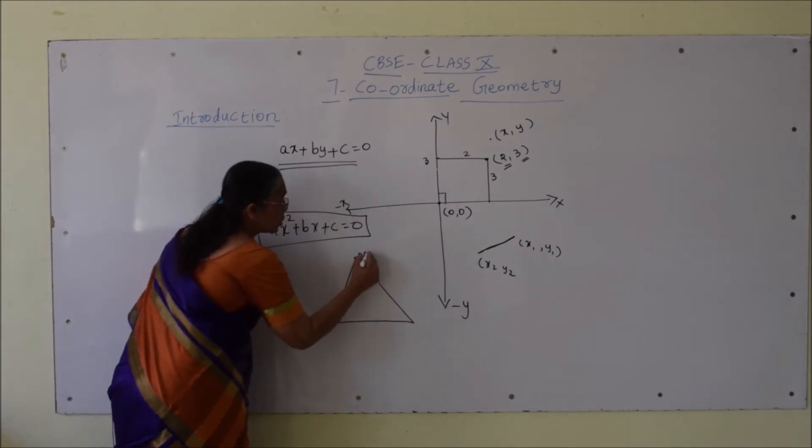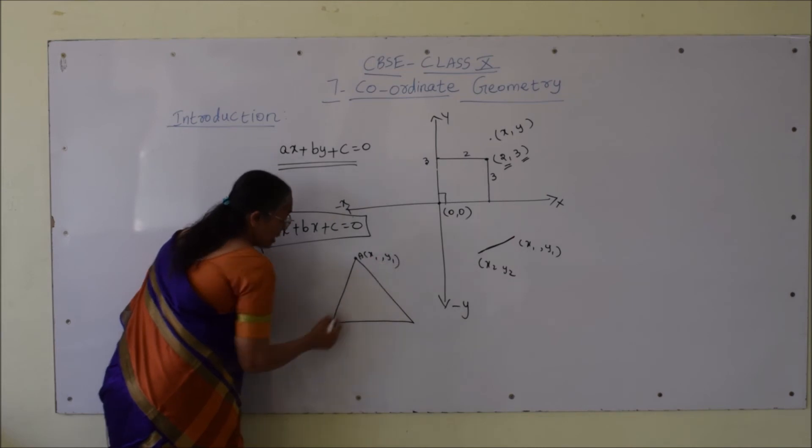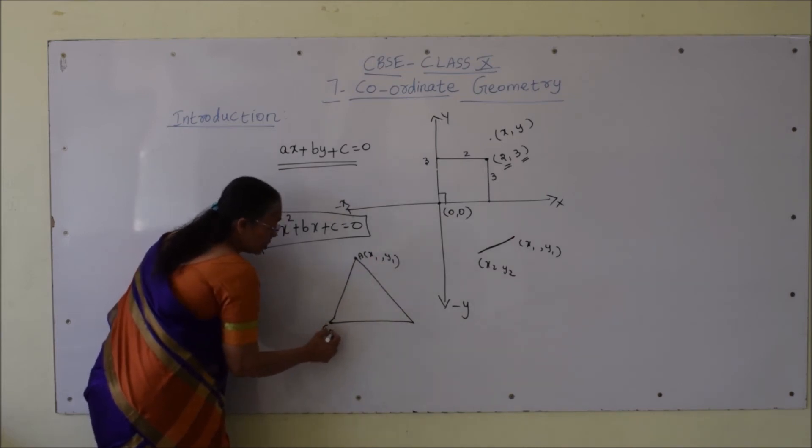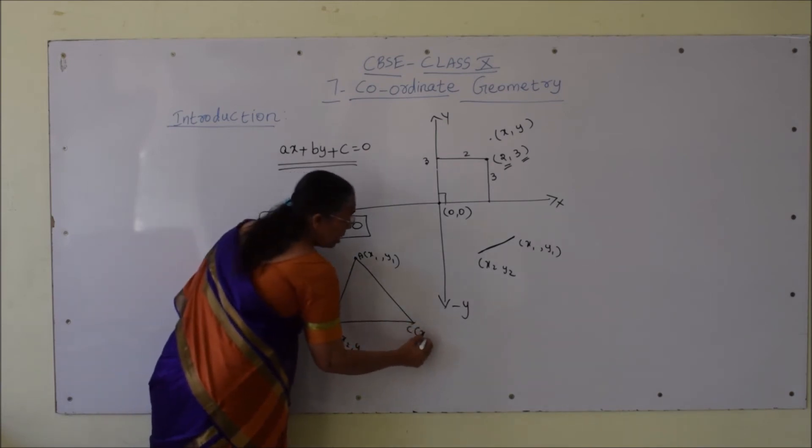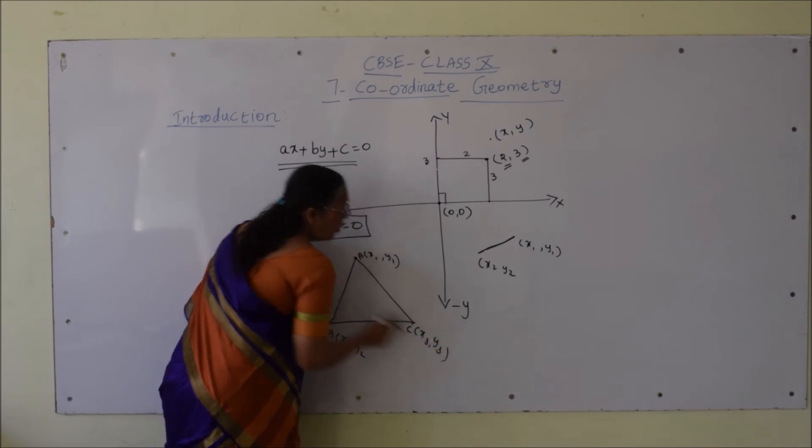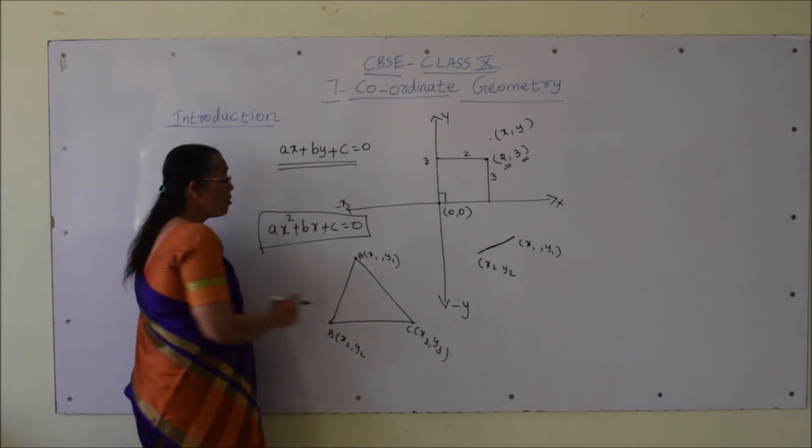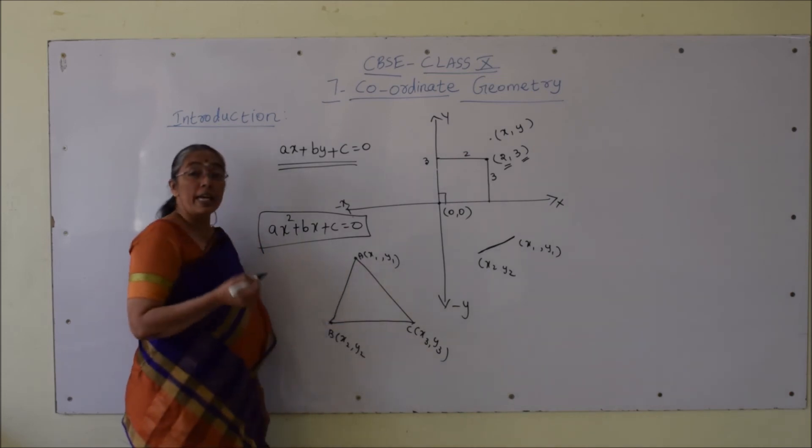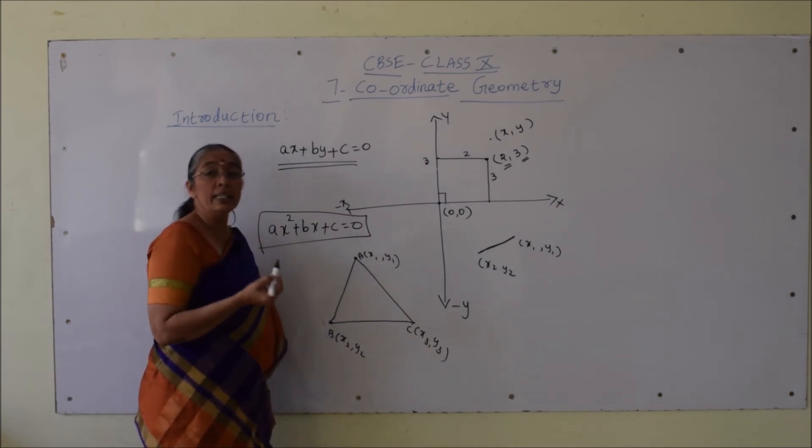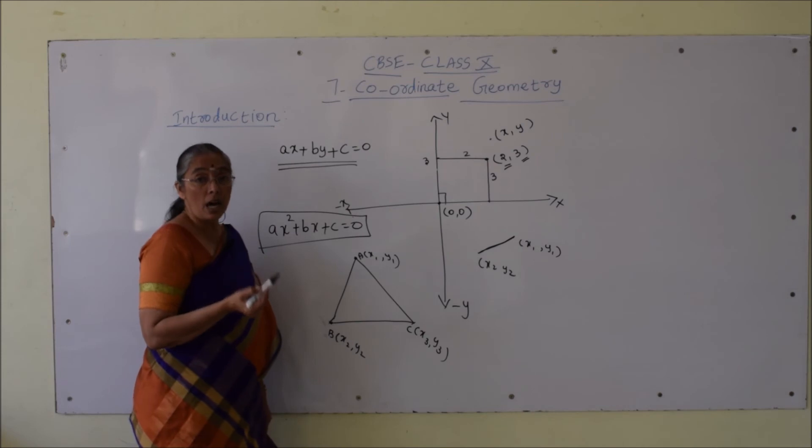And vertex C as (x₃, y₃)—how do we find the area of triangle ABC? So far you know if base and height are given, area is half times base times height.